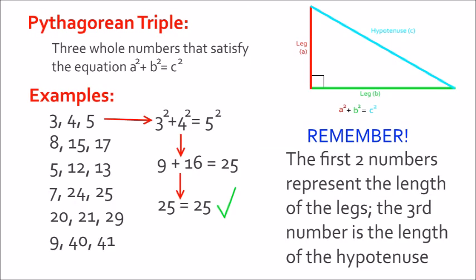So now we'll move on to Pythagorean triples. What is a Pythagorean triple? It's a set of three whole numbers that satisfy the equation A squared plus B squared equals C squared. Some examples are 3, 4, 5 — 8, 15, 17 — 5, 12, 13 — and so on. These are Pythagorean triples because when you plug each of these numbers into the equation A squared plus B squared equals C squared, the value on the left side of the equation is always equal to the value on the right side. Always remember that the first two numbers in a triple represent the length of the legs, and the third number is the length of the hypotenuse.